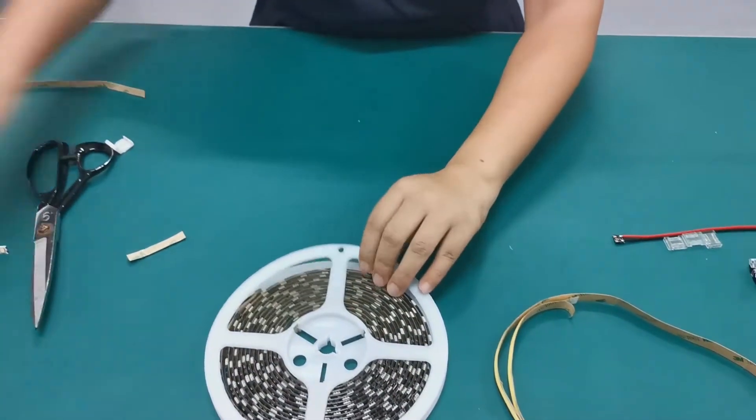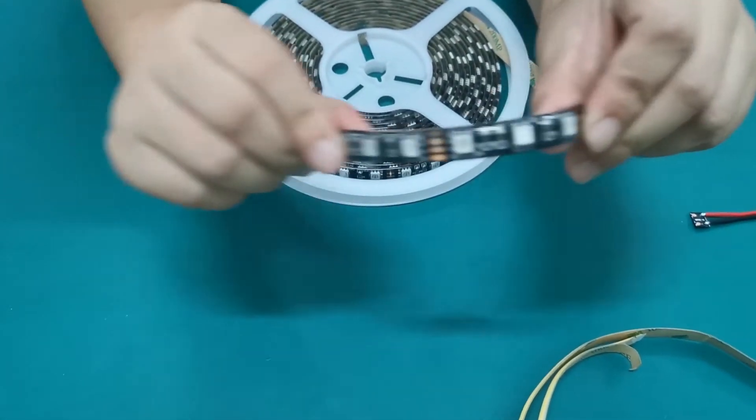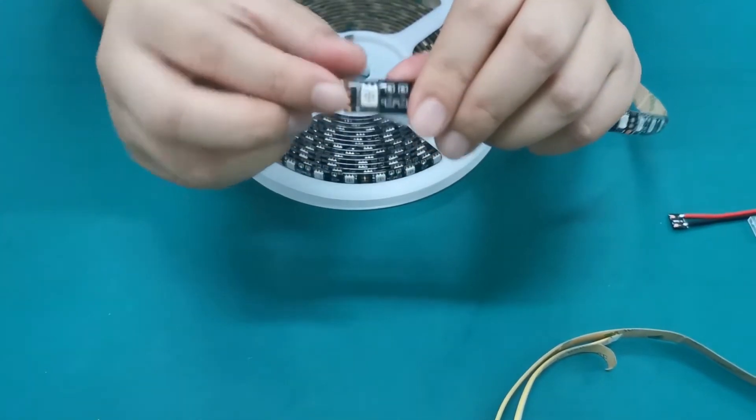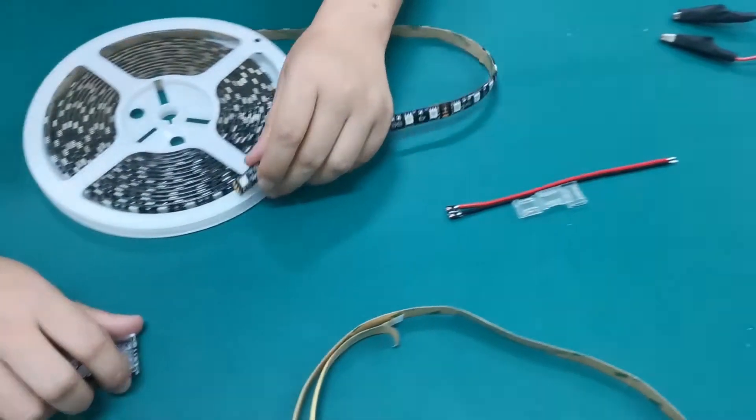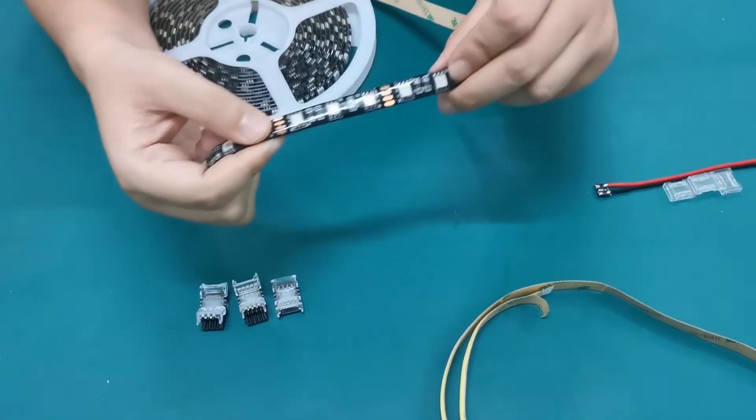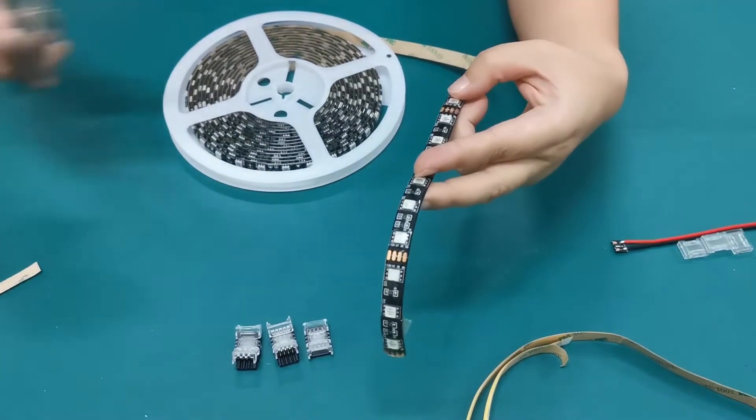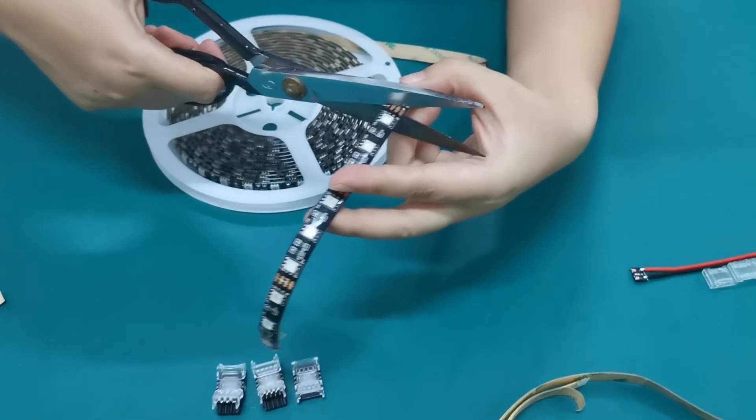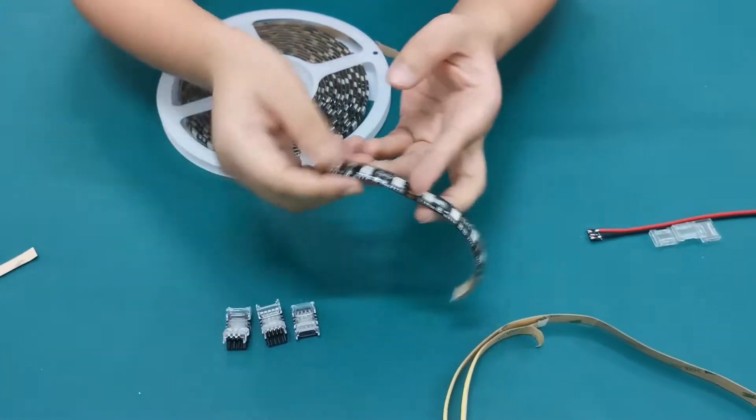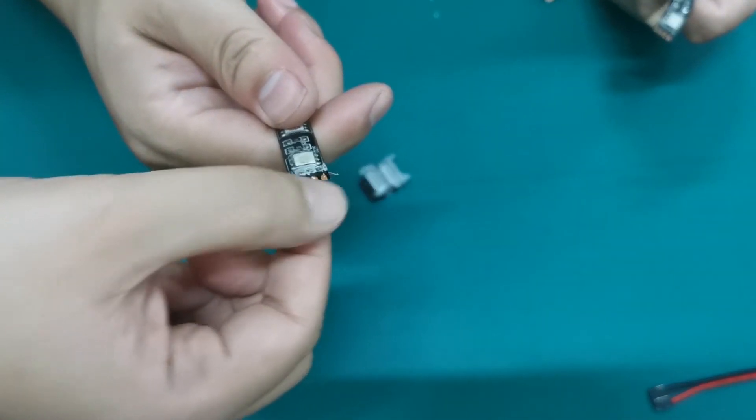As I see here, this one is the waterproof. You can see the surface has the glue on the surface. So we will use this one. This kind of connector can be used for the waterproof type. It's also very easy to cut after the cut mark. You can see here, just like this one.